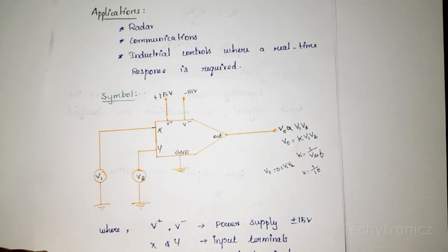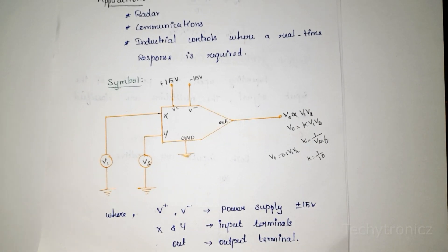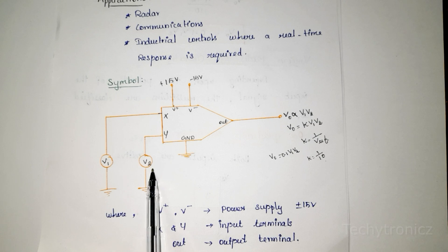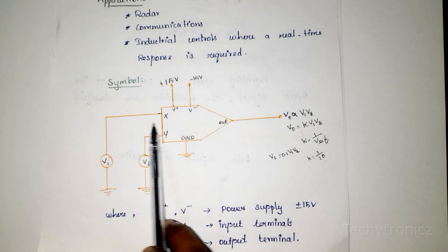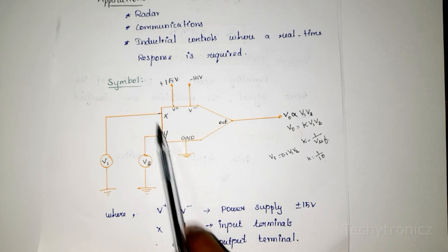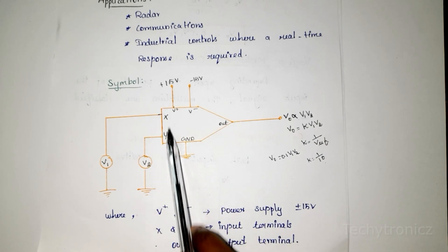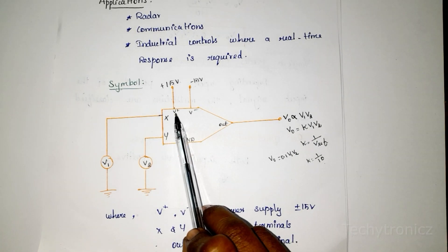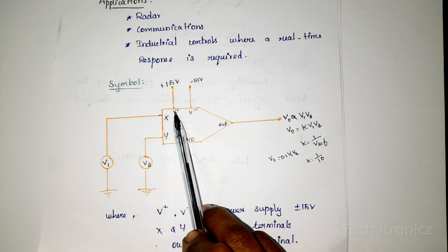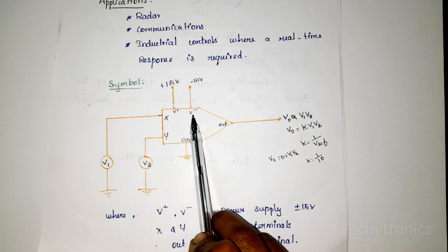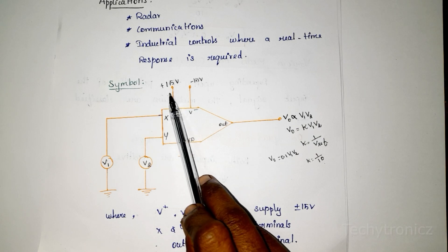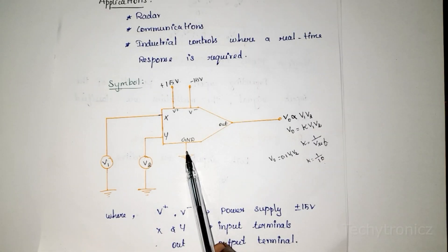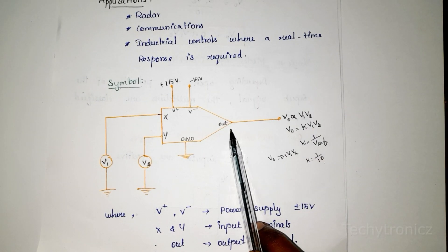This is the symbol of analog multiplier. V1 and V2 are the independent input voltages given to the X and Y input terminals. V+ and V- are the voltage supply, that is plus 15 volt to minus 15 volt. There is also a ground terminal and an output terminal.